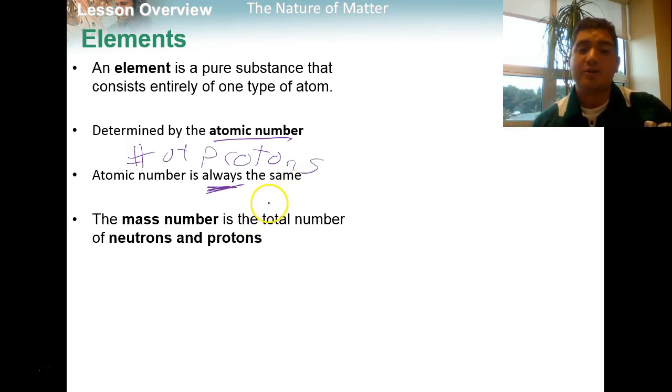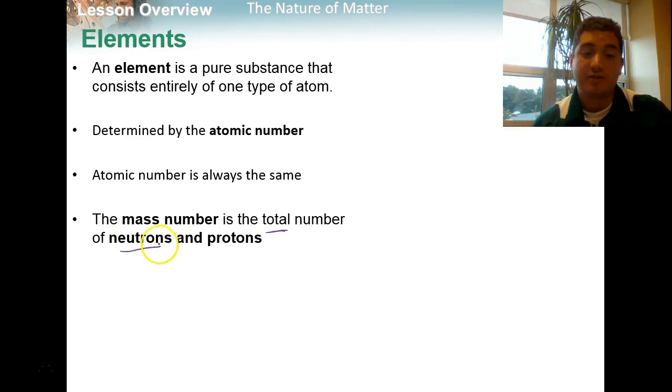Now in all types of elements, the atomic number is always the same. It's important to remember that if you change the atomic number, you change the actual element that you're talking about. This gives us another term called the mass number. Now if we think of mass, we should think of like adding something together. So the mass number is the total number of neutrons, the neutral guys in the nucleus, and protons.